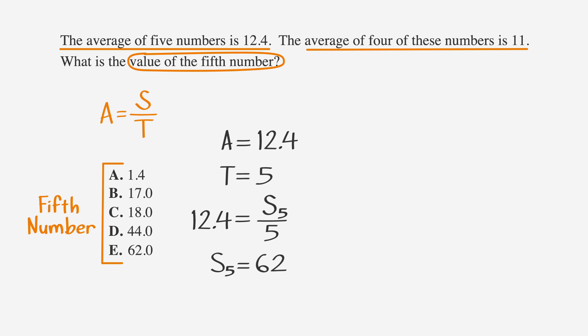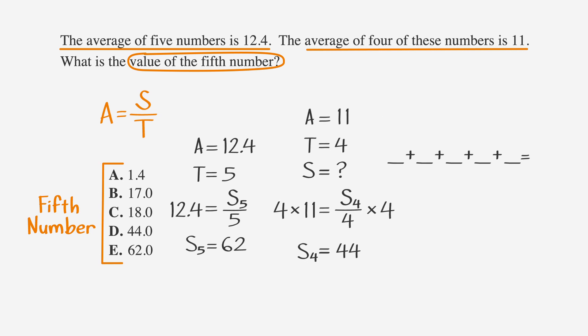We still need to find the individual numbers though. Let's go on to the second sentence. The average of four of these numbers is 11. Well, that means that A equals 11 and T equals 4. We're just missing S. So we'll use the formula A equals S over T and substitute 11 equals S over 4. Then we multiply both sides by 4 and we get that S equals 44.